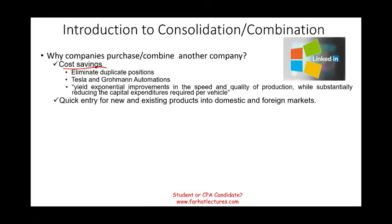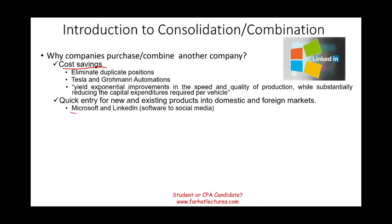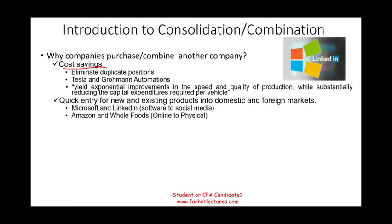Another reason is quick entry to a new market, an existing product, or a foreign market. A classic example is Microsoft buying LinkedIn — Microsoft wanted to start a social media presence, so rather than building one from scratch, a quick entry is to buy an existing one. Similarly, Amazon buying Whole Foods: Amazon is online selling, Whole Foods has physical locations, so rather than starting from scratch, you buy something that already exists.